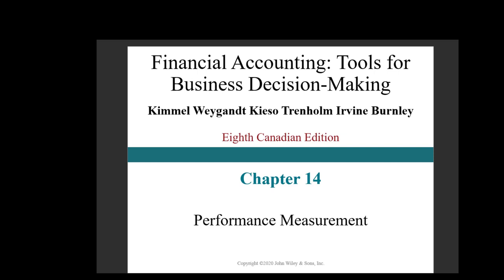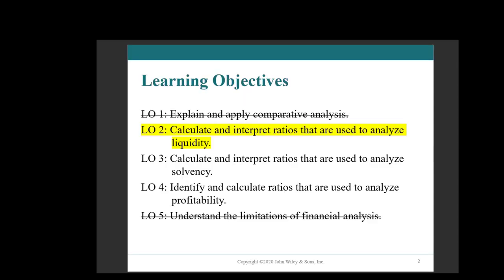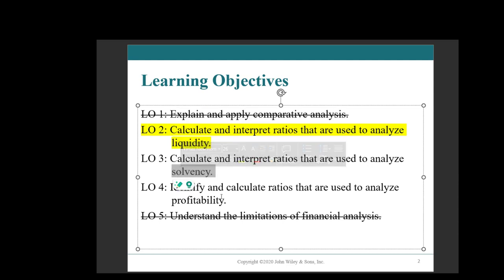Hello and welcome back. This is Chapter 14, Performance Measurement — it also happens to be our last chapter of the course. In this chapter we have three learning objectives. We are going to look at calculating and interpreting ratios for liquidity, solvency, and profitability. In this video we will be looking at the first type, which is liquidity.